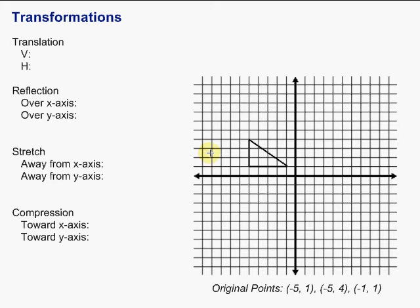In this video, we're going to take a look at and apply four different types of transformations. The first one is a translation, also known as a slide. The next one is a reflection — over the x-axis and over the y-axis. Then we're going to have a stretch, stretching both away from the x-axis and the y-axis. And finally, a compression, where we push it towards the x-axis and toward the y-axis.